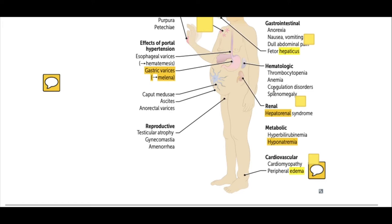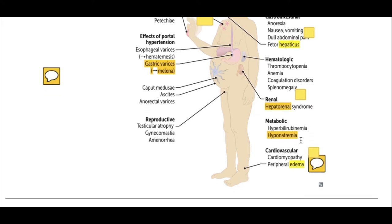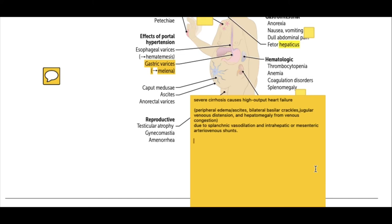The renal system is involved through hepatorenal syndrome, which involves renal vasoconstriction. On a metabolic basis, there will be hyperbilirubinemia — increased bilirubin in the blood — and hyponatremia, which is decreased sodium levels in liver cirrhosis.